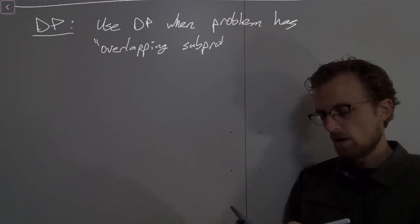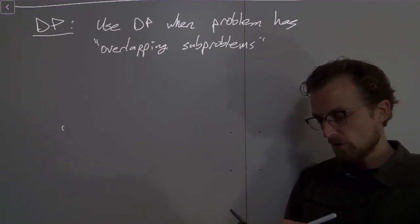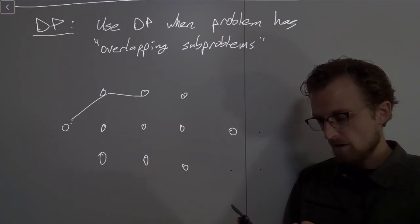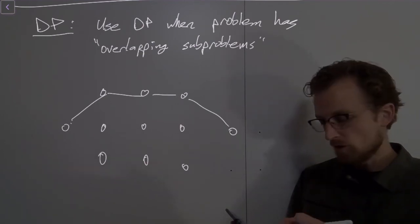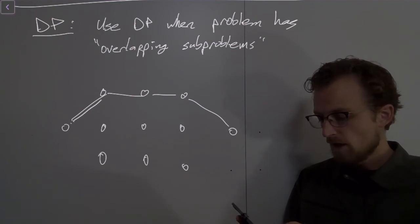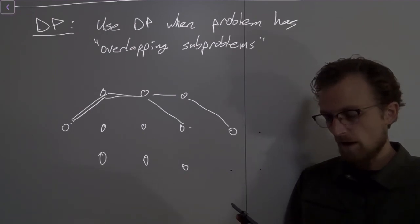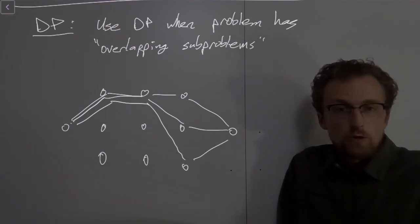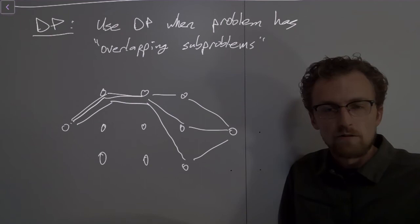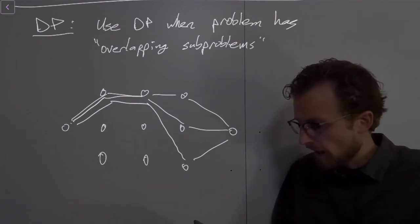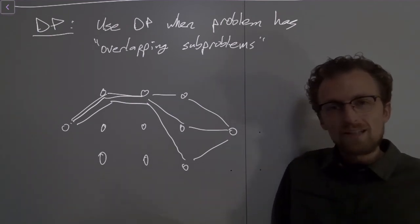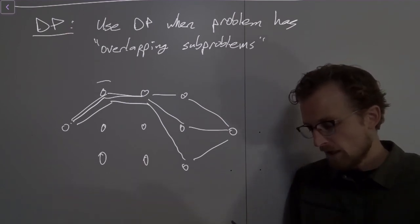And so the idea in the routing problem was that the overlapping subproblems looked something like this. For example, I might have this is one potential path in the graph. This is another path in the graph. This is another path. And those are three distinct paths in an overarching sense, they're three distinct paths. But they're not totally distinct. They all overlap in this section.